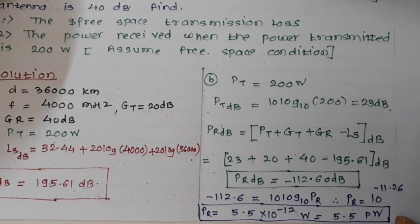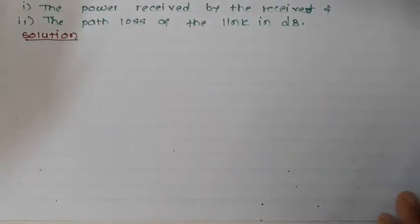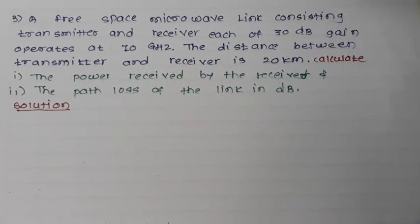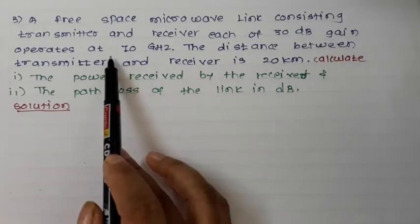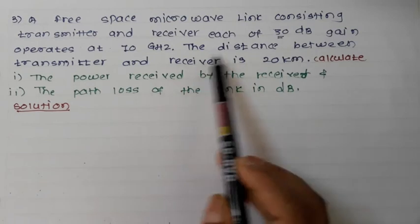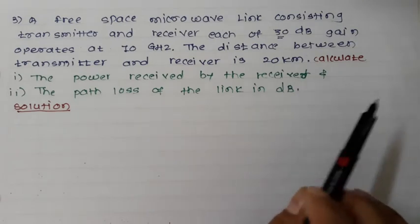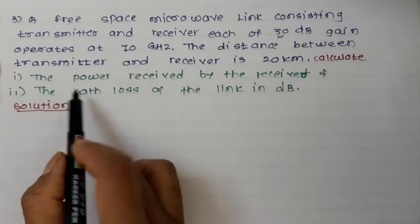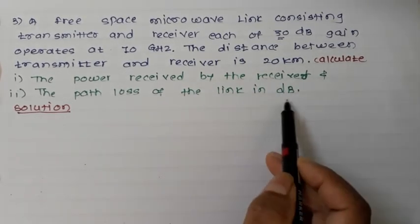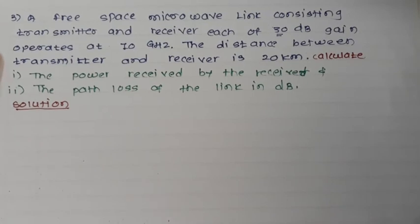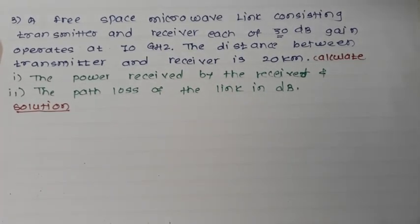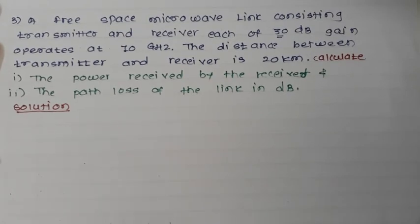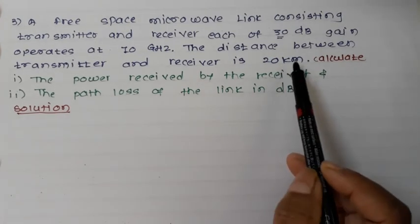Now let us solve another problem based on the Friis free space equation. A free space microwave link consists of a transmitter and a receiver each with 30 dB gain, operating at 10 GHz. The distance between the transmitter and receiver is 20 km. We are asked to calculate the power received by the receiver and the path loss of the link in dB. We also know that the transmitter radiates 15 watts of power.